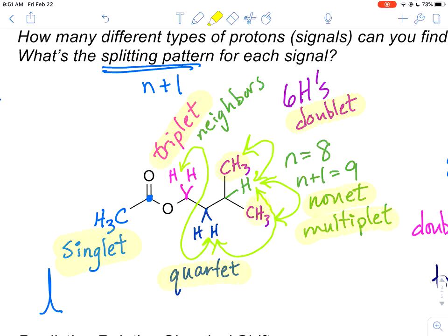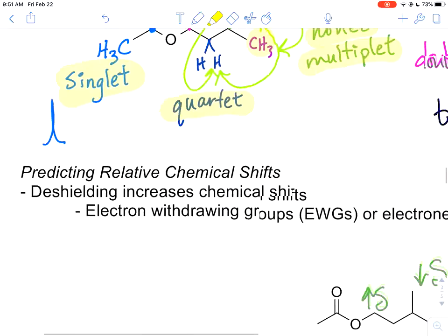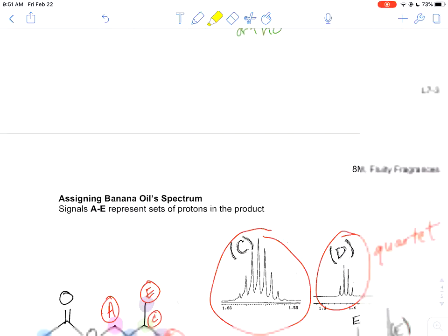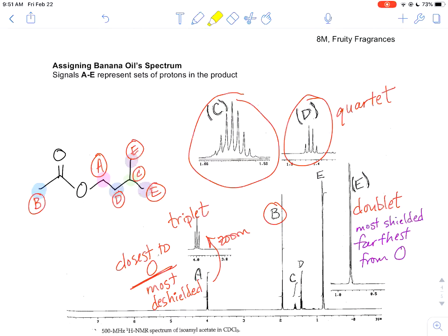We then applied that and used just the splitting patterns to assign the spectrum. The next page of isoamyl acetate. This guy is given. We identified, hey, look, we had a triplet, so that must have been signal A.